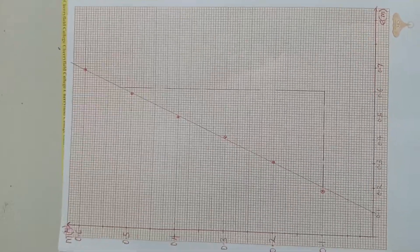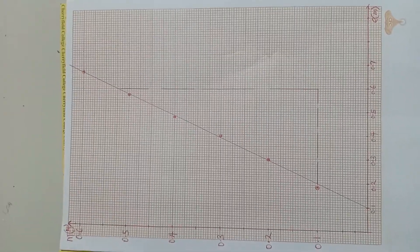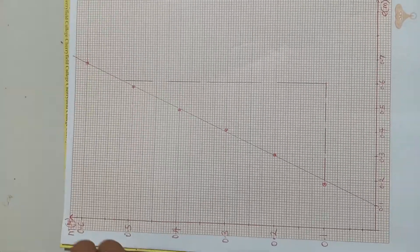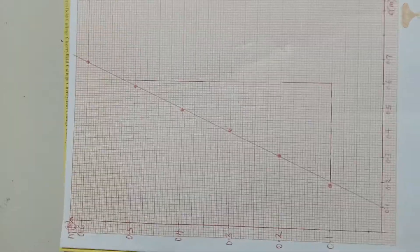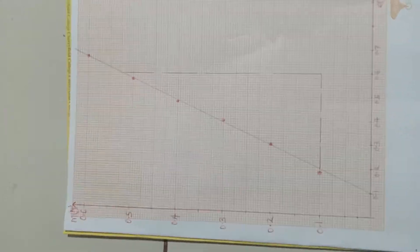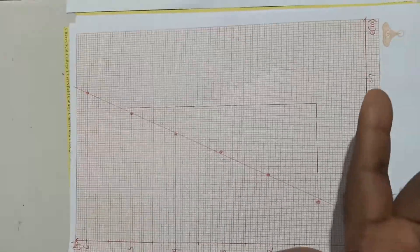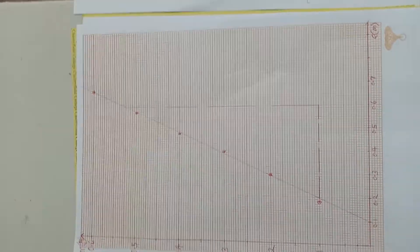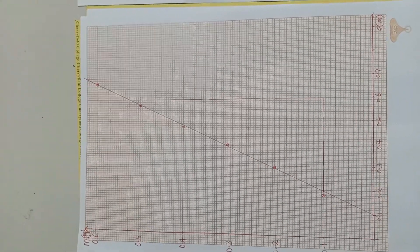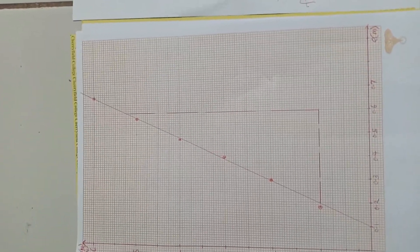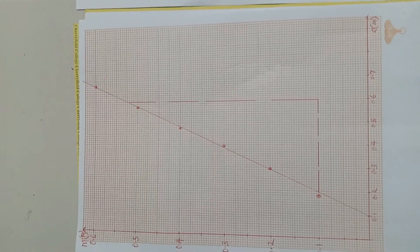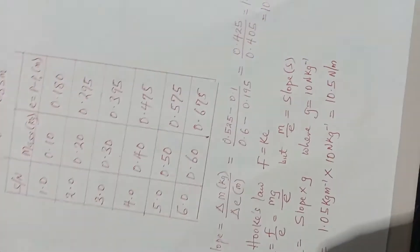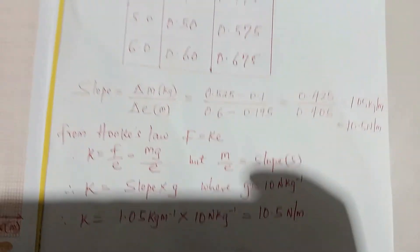You can see that my graph is a straight line graph. So this is a graph of M on the vertical axis which could also be converted to the load in Newton by multiplying all these values by 10, and then the extension produced on the horizontal axis. So this is what the graph is. So now the slope of the graph calculated gave me this.